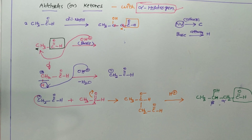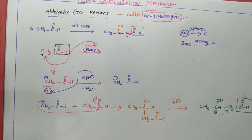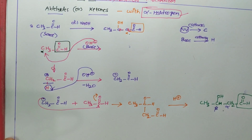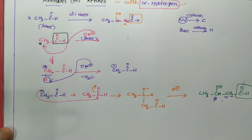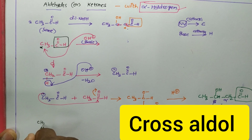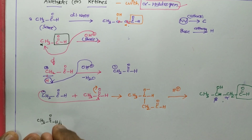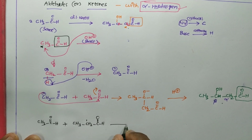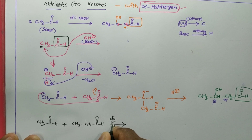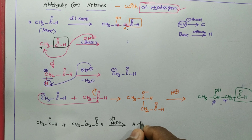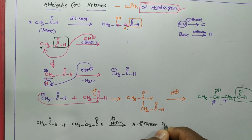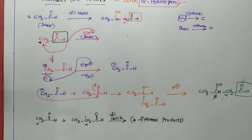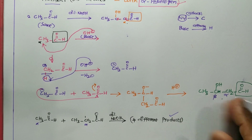Suppose different aldehydes are reacting instead of the same aldehyde. For example, if I take CH₃CHO and CH₃CH₂CHO and react them in the presence of a dilute base like sodium ethoxide, I'll be getting four different products. This is called cross aldol condensation. In this case, both molecules should have alpha hydrogen, and that will give four different products — which will be discussed in another video.